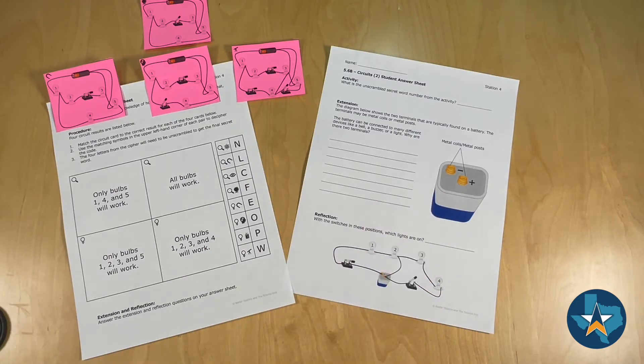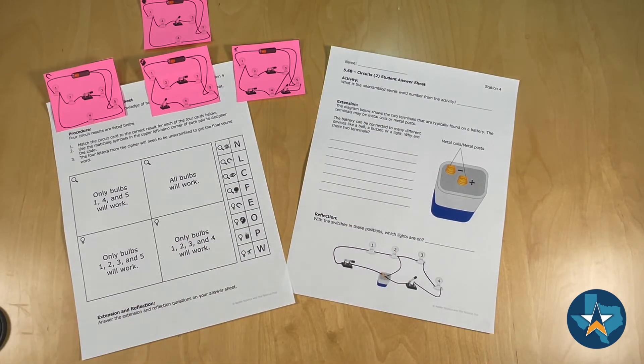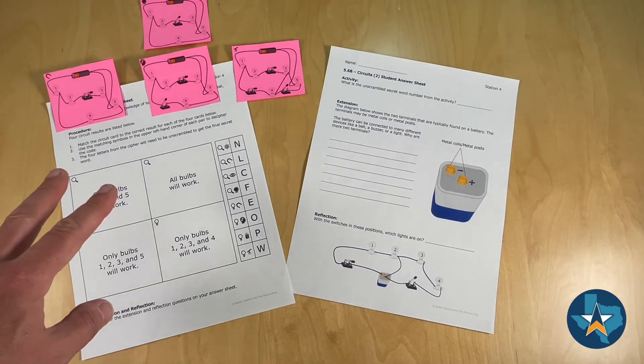On the right hand side you'll see student answer sheets that contain the activity, the extension, and the reflection questions. This will travel with each student as the stations are completed. Let's look back at the activity sheet.